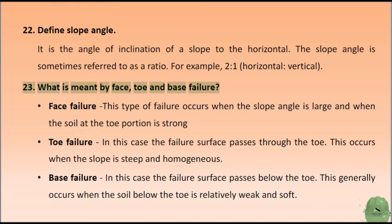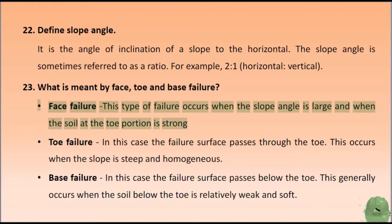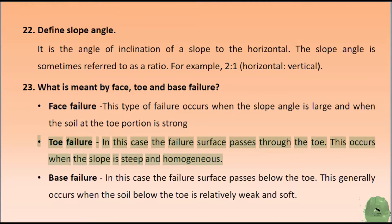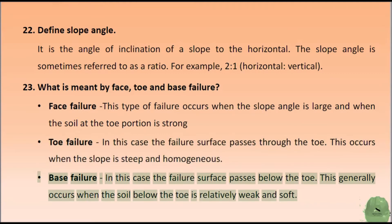What is meant by face, toe, and base failure? Face failure: this type of failure occurs when the slope angle is large and when the soil at the toe portion is strong. Toe failure: the failure surface passes through the toe; this occurs when the slope is steep and homogeneous. Base failure: the failure surface passes below the toe; this generally occurs when the soil below the toe is relatively weak and soft.